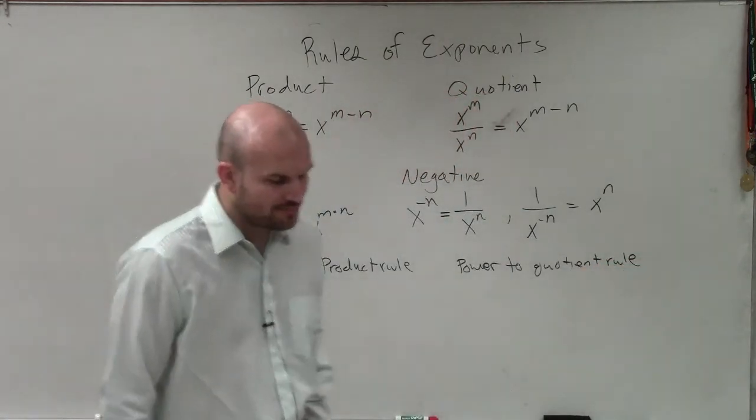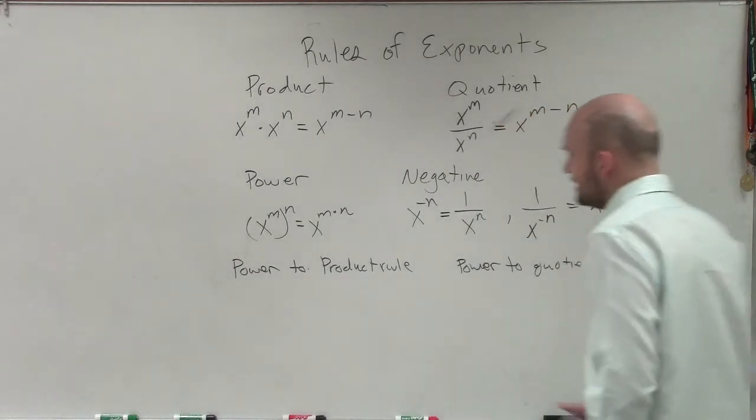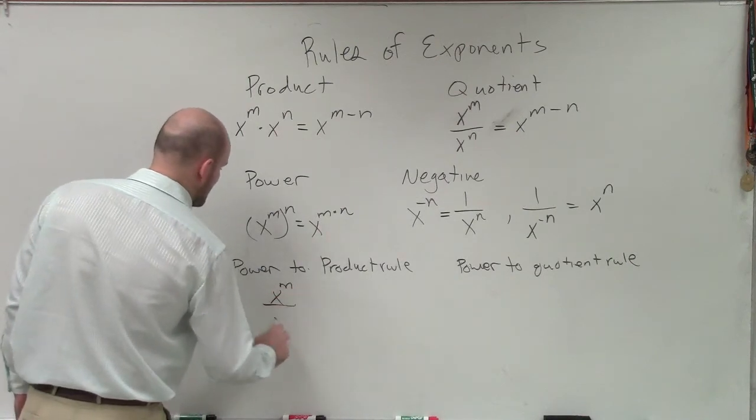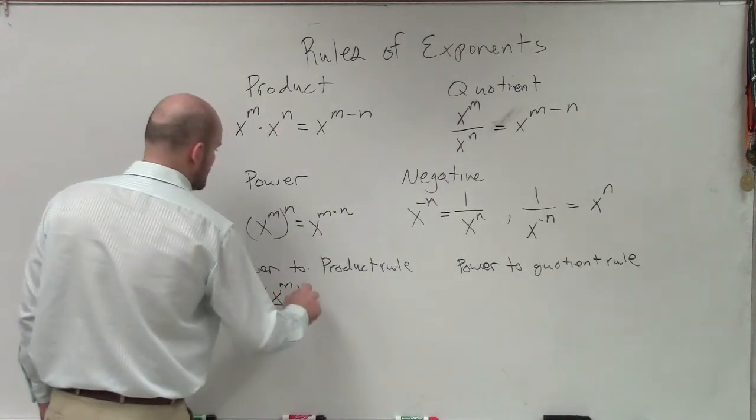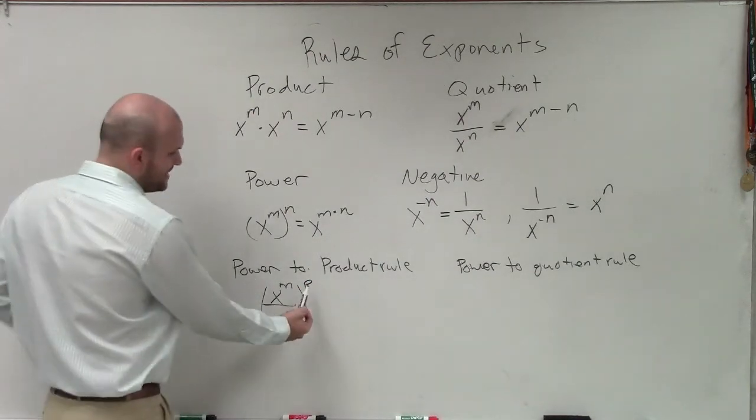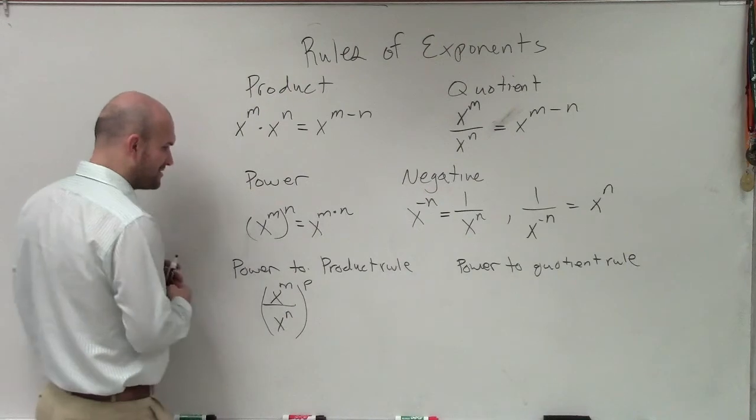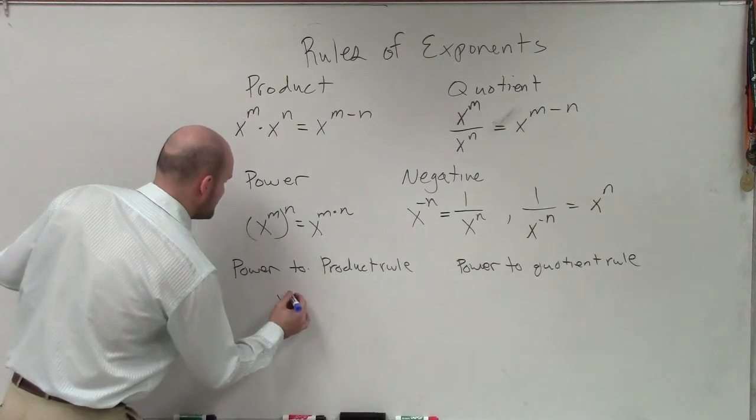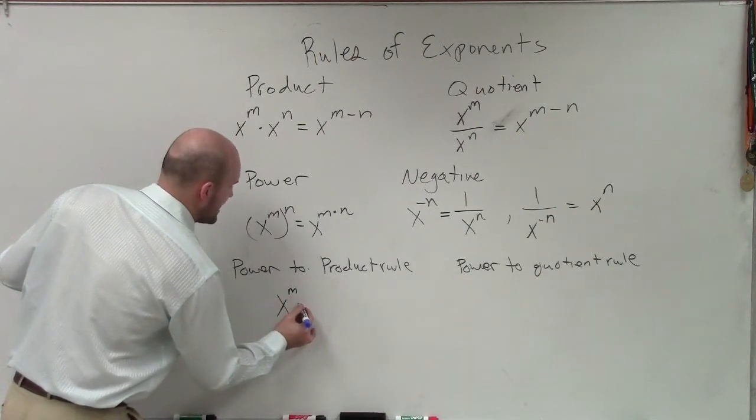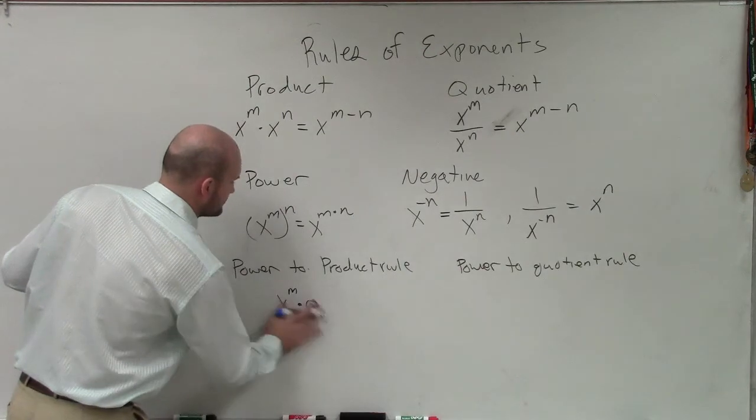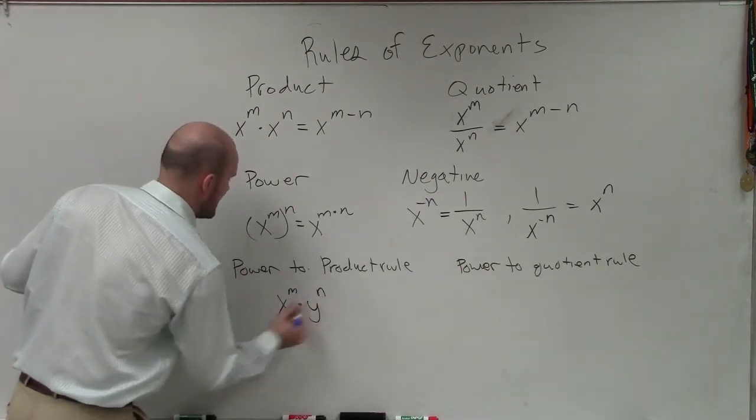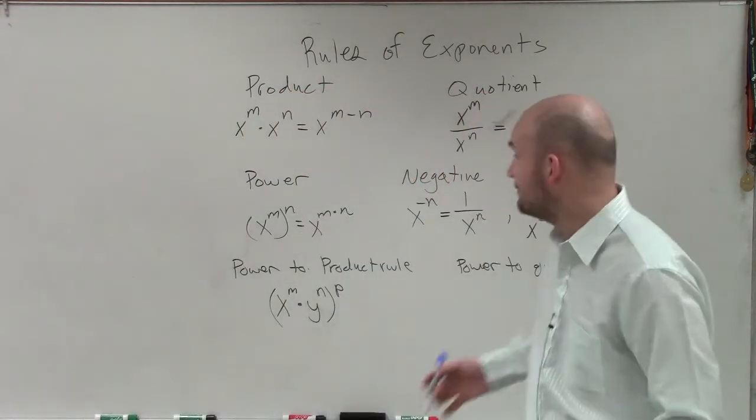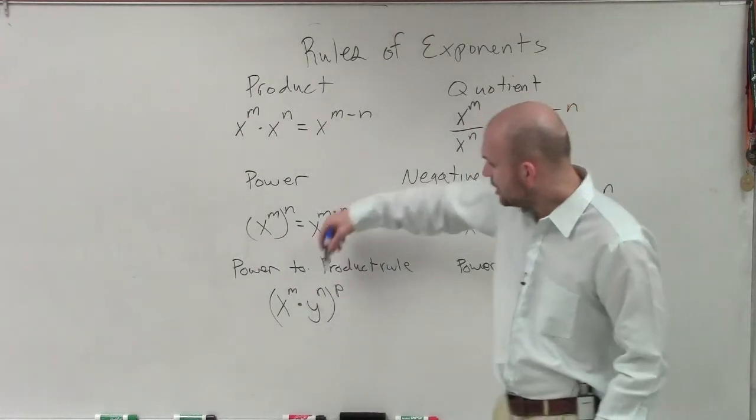What the power to product rule and the power to quotient rule state is, let's say I have x to the m times y to the n to the p power. We can have different bases because we're not actually combining these two powers or these two bases. We could have the same exponent or different exponents, but both of those are being multiplied. They cannot be added or subtracted.